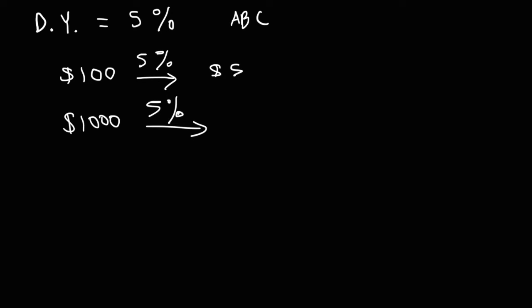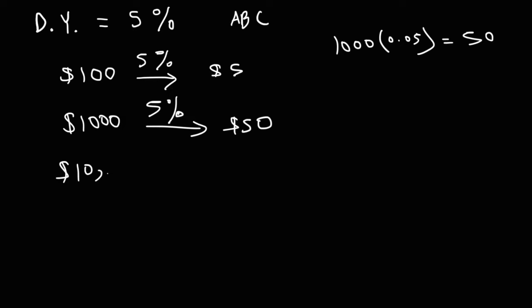Now, if we decide to invest $1,000 in this stock at a 5% dividend yield, we're going to earn 5% of $1,000. That's $1,000 times 0.05, which equals $50. So every year, this company is going to pay us $50, assuming the dividend yield remains the same. If we invest $10,000 at the same dividend yield, we're going to receive $500 per year, if everything remains constant.